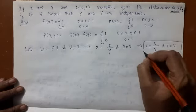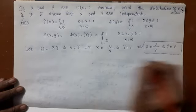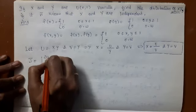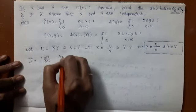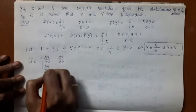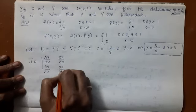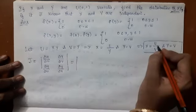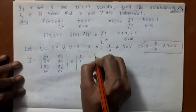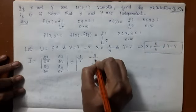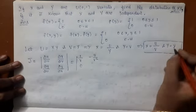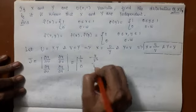This is the transformation we are going to consider, and for this we compute the Jacobian of transformation. The Jacobian matrix is: ∂x/∂u, ∂x/∂v in the first row and ∂y/∂u, ∂y/∂v in the second row. ∂x/∂u = 1/v, ∂x/∂v = −u/v², ∂y/∂u = 0, and ∂y/∂v = 1.